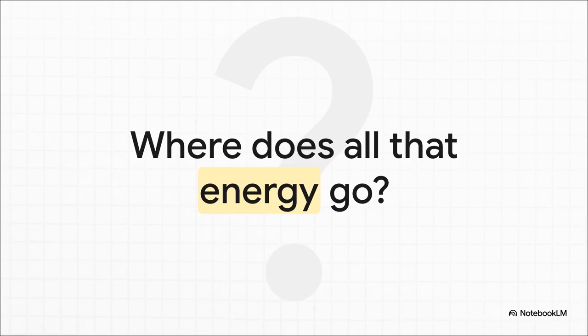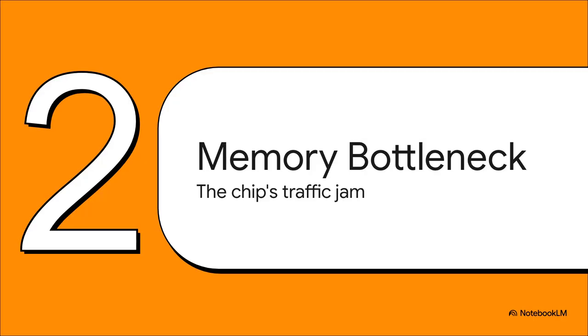So, where is all that juice actually going? You might think it's the AI doing all its complex thinking, right? Well, the truth is a little less glamorous. It really all boils down to a massive traffic jam happening inside the computer chip. And this traffic jam has a name: The Great Memory Bottleneck.